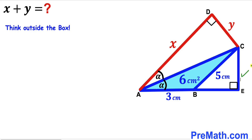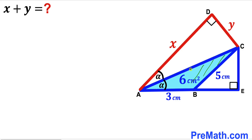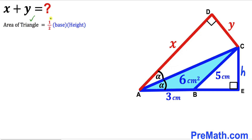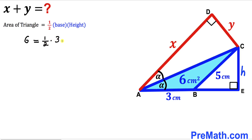We've created right triangle BEC. Focusing on triangle ABC, CE is the height of the blue triangle — I'll label it lowercase h. Recalling the area formula: area = ½ × base × height. In our case, base is 3, height is h, and area is 6. So: 6 = ½ × 3 × h.